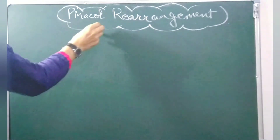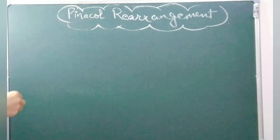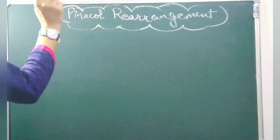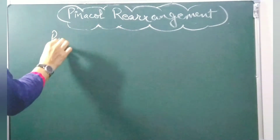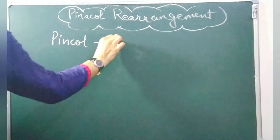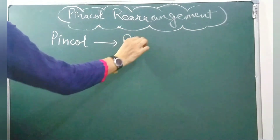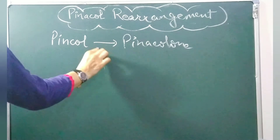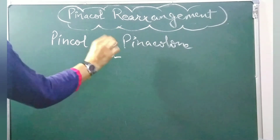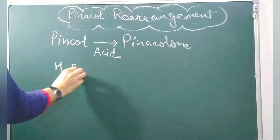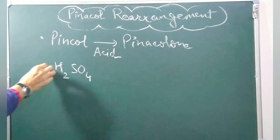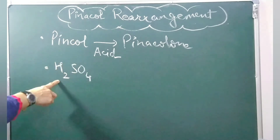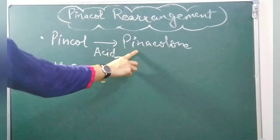Welcome back to another video. Today we are taking pinacol rearrangement. What happens in pinacol rearrangement? In pinacol rearrangement, pinacol is getting converted into pinacolone. This reaction is taking place in presence of acid, and the acid here is H2SO4. That means when pinacol, a 1,2-diol, is treated in presence of H2SO4, pinacolone is formed.